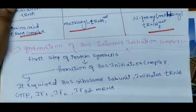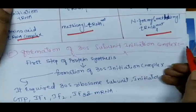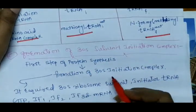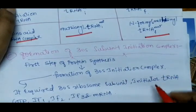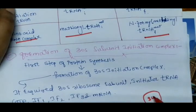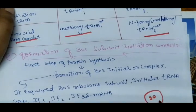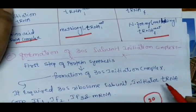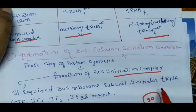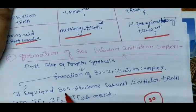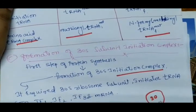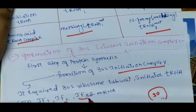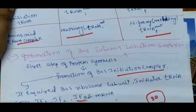After the formulation of methionine, the next step is the formation of the 30S subunit initiation complex. For this formation, the following components are required: the 30S subunit, initiation tRNA, GTP, initiation factors IF1, IF2, and IF3, and the mRNA.